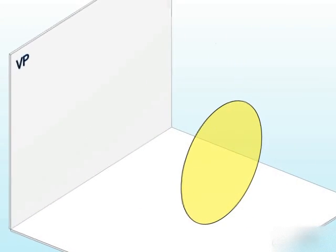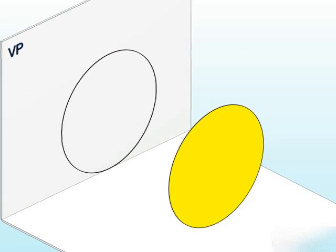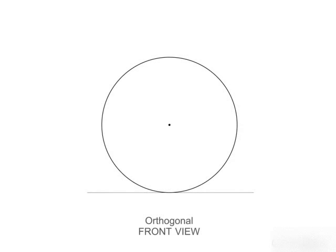So its isometric views are drawn by applying four center method. Consider a circular lamina which is positioned on HP with its surface parallel to VP.